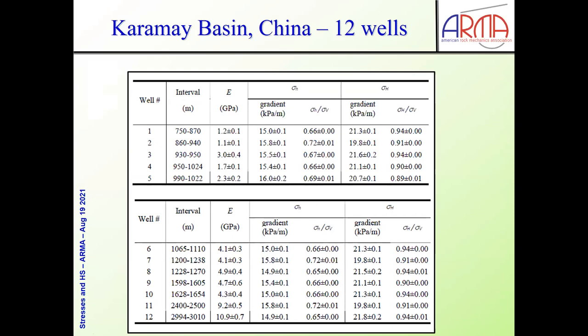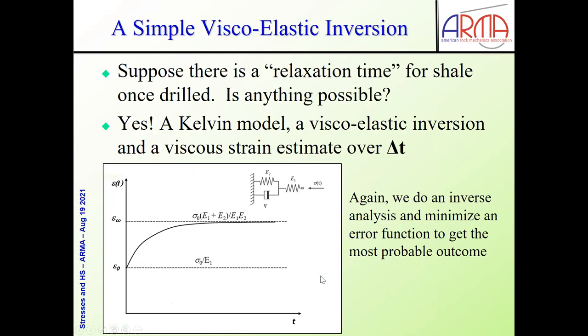Here's a set of deep wells on the bottom, shallow wells on the top for the Karamai Basin in West China. We have included the estimates and the errors from our estimates. What you see here is plotted as the gradient of sigma-H-min in one of the central columns, and then the ratio of sigma-H-min to sigma-V. We did the same thing for sigma-H-max. Since these two numbers are both less than one, this is a normal fault situation. We did similar things deeper in the basin and found always normal faulting situations.